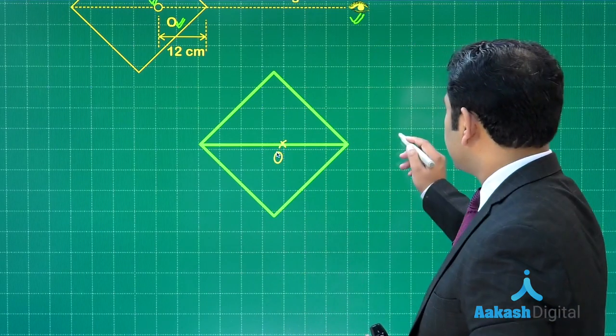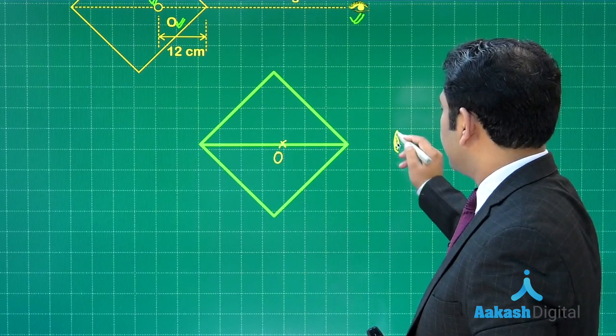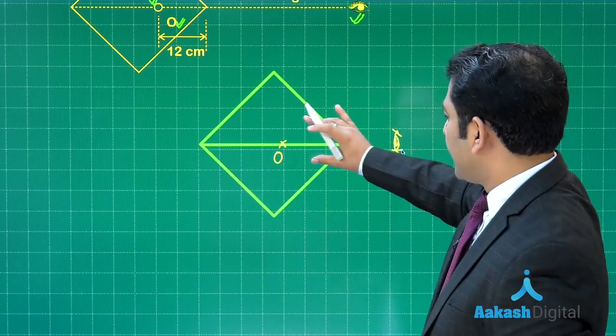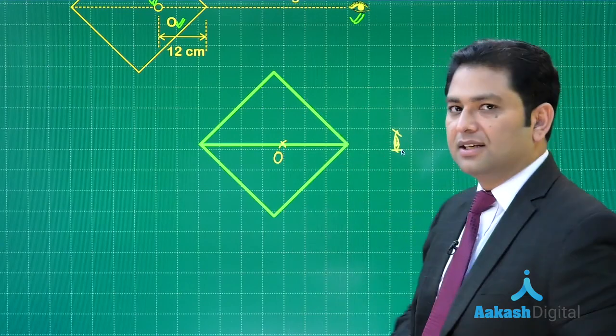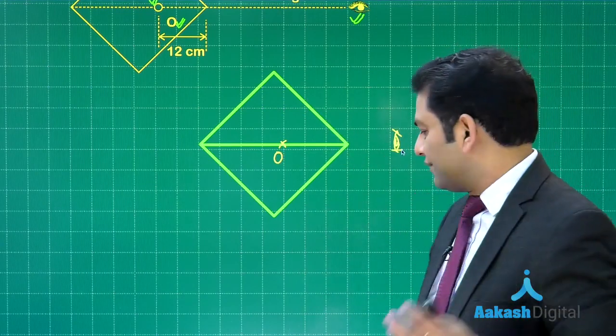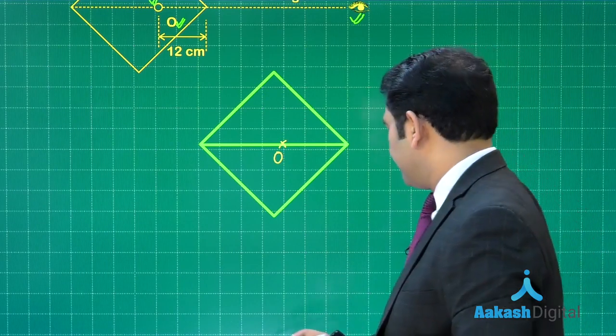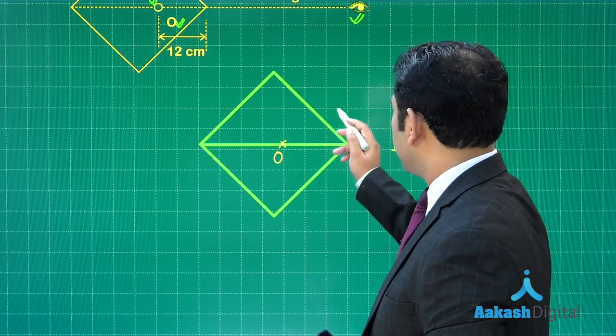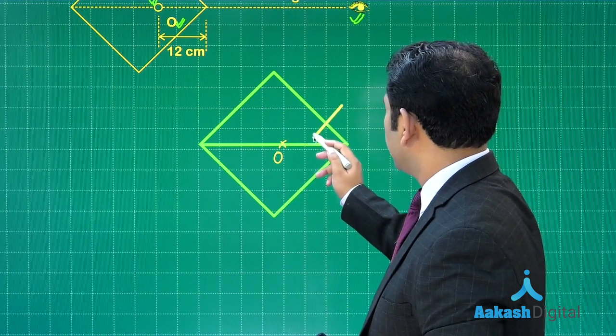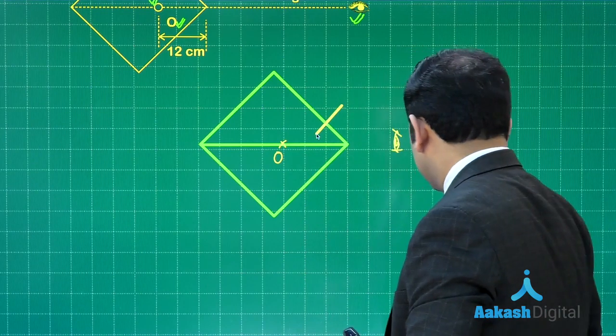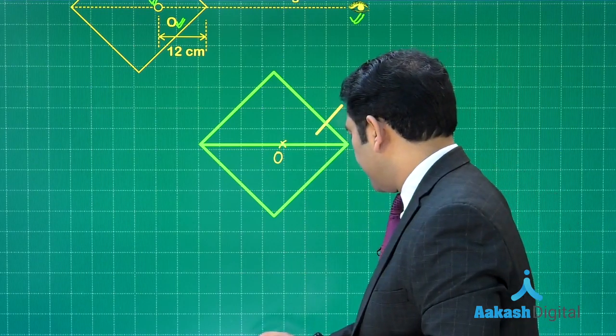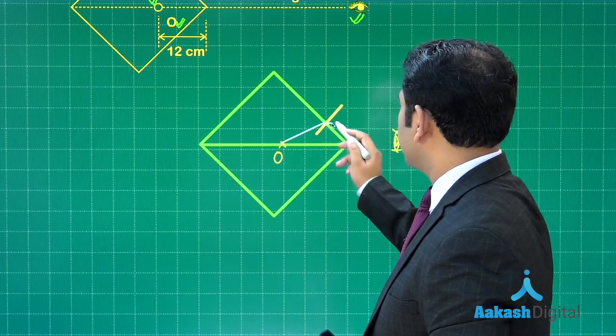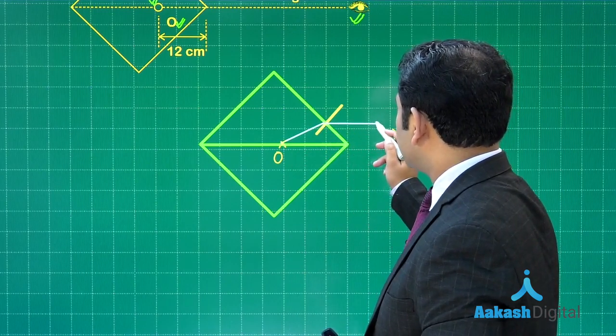The distance of the object is 12 centimeters. Since the observer is on this side, which refracted ray would be considered? The refracted ray reaching towards the observer. Let me make a normal here, and then the ray goes this way.